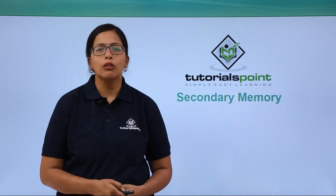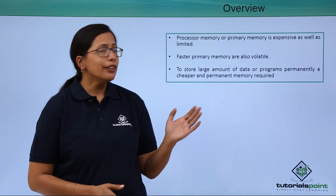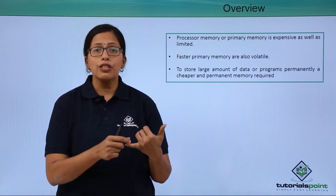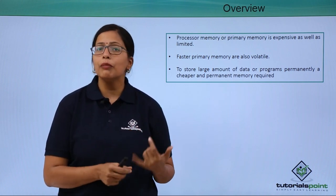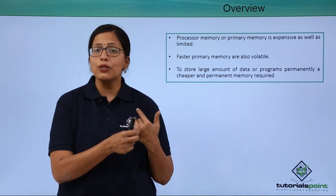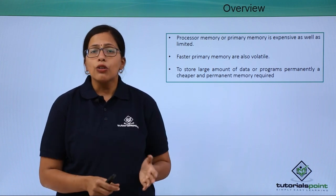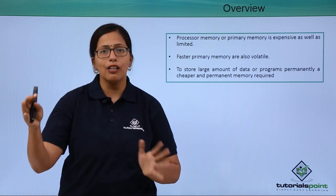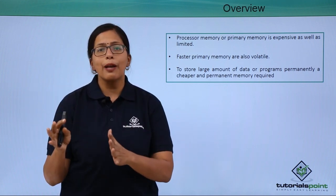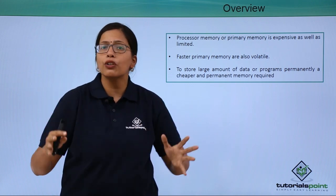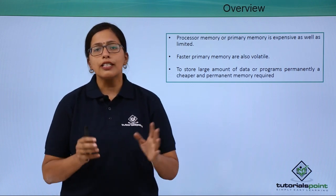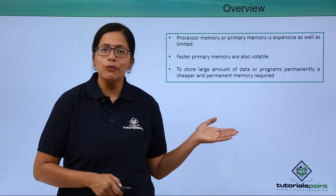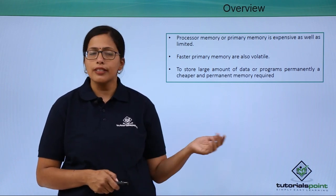In this video, we are going to discuss about the secondary memory. In the previous video, we discussed about the primary memory, which was very fast but at the same time it was very expensive as well as volatile. So a cheaper memory was needed which could be had in very large amounts so that big programs, instructions, or even large amounts of data could be stored. This was possible due to the secondary memory. Now let's see what secondary memory is and what are its characteristics.